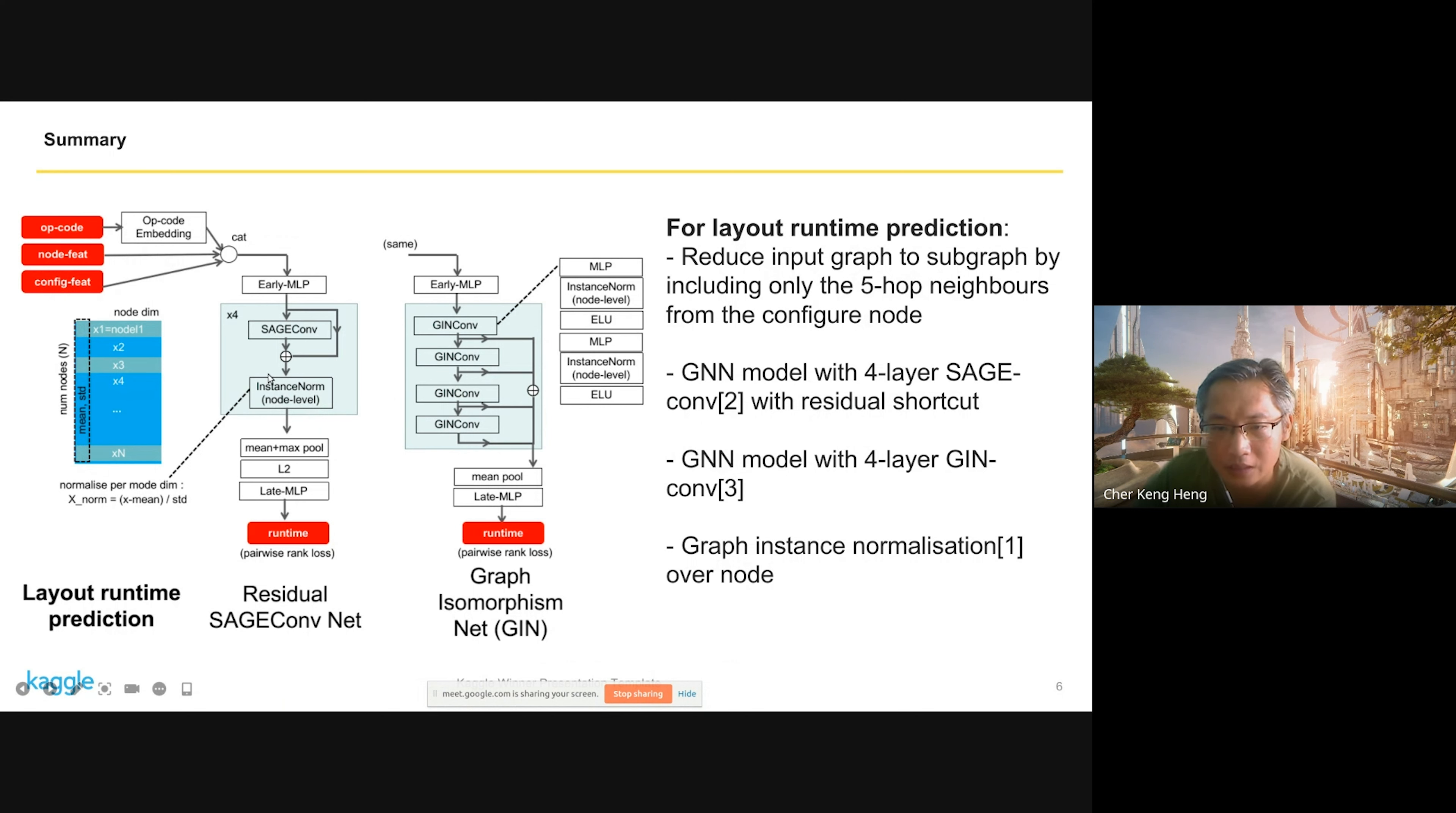For GNNs, for readout it's mean plus max pooling. For layout it's pairwise rank loss, but I use the exponential form instead of the hinge version. For GIN, I still use the instance norm. This is the architecture.